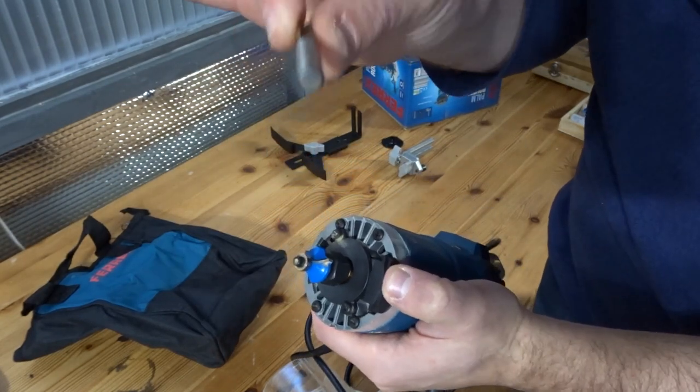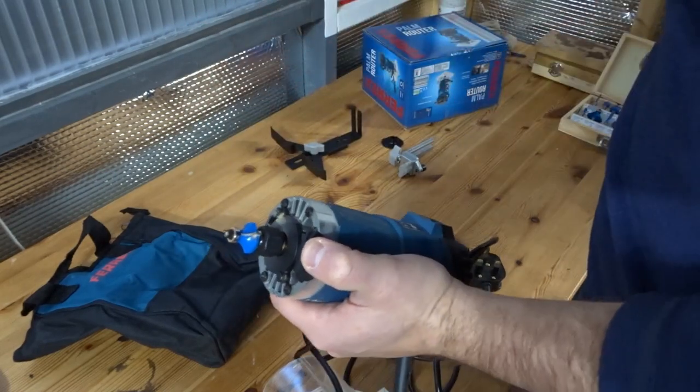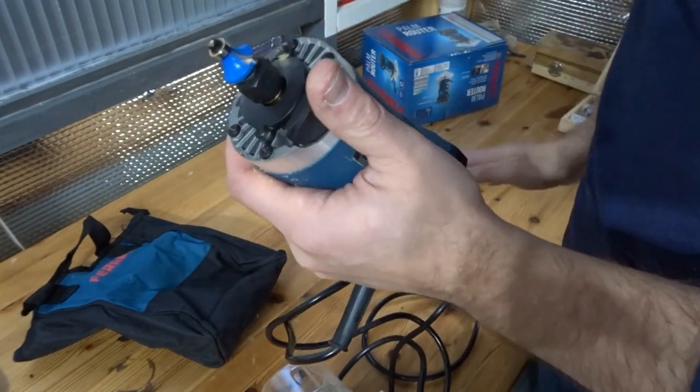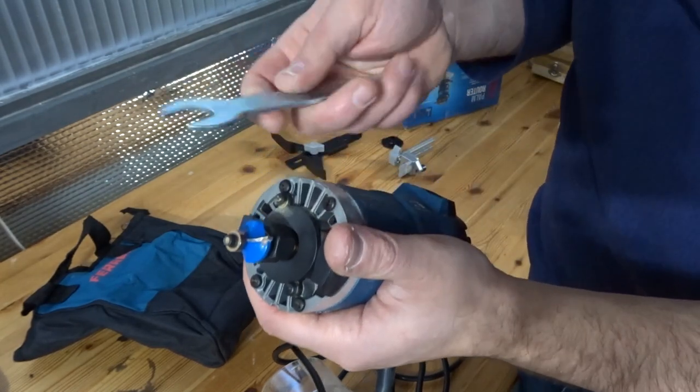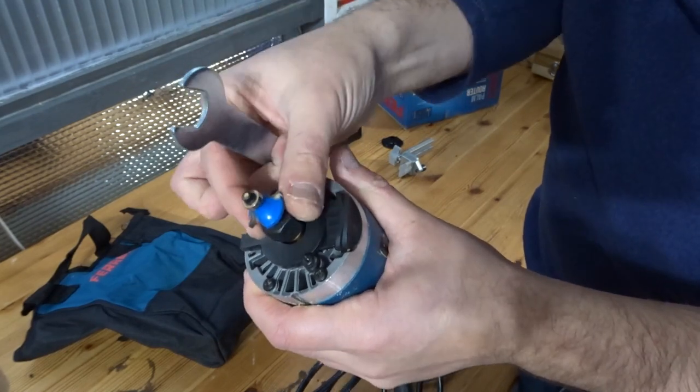And that is the bit which is a standard straight cut bit. That's what came with it. So there's a spanner that comes with it as well. And that's what you use to change a bit.